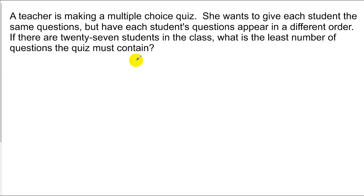In this next problem, I've got a teacher making a multiple choice test up, who wants to give each student the same questions, but have each student's questions appear in a different order. There's 27 kids in the class, what's the least number of questions that the test must contain? So what they're really asking is, how many different tests can I make, and I have to make 27 different tests. So clearly, if I had one question, I could only make one test. If I had two questions, then I could make 2 times 1 test.